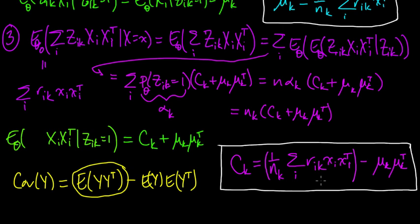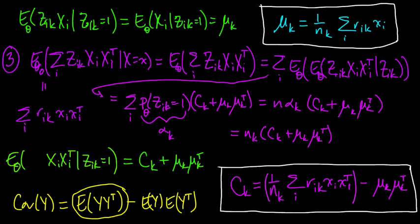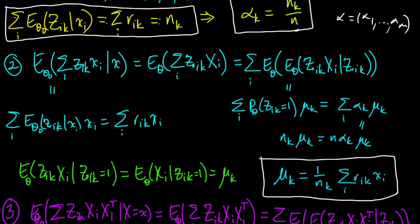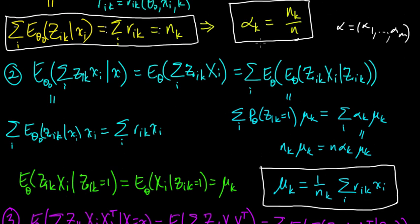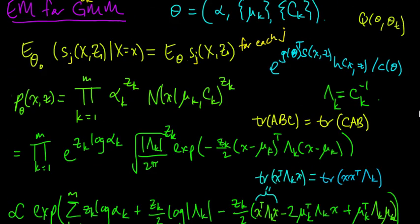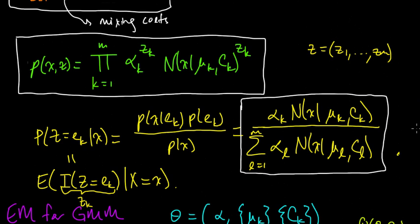We got theta—theta was alpha, all the mus, and all the cs. Down here, we got all the alphas. Alpha was just alpha 1 up to alpha m. So we got all the alphas, we got all the mus, and we got all the covariance matrices. That's it—that's EM for the Gaussian mixture model. It was some work to derive it, but this is just very easy to implement. All you do is iteratively solve these equations. Once you've solved them for one step, you just have to update the riks to use in the next step.